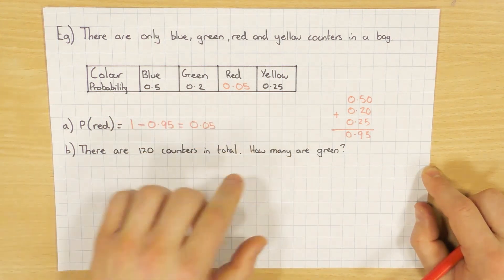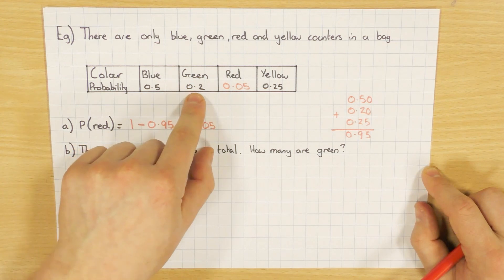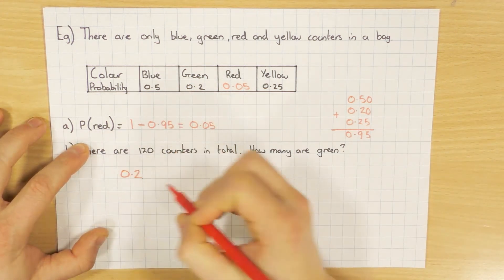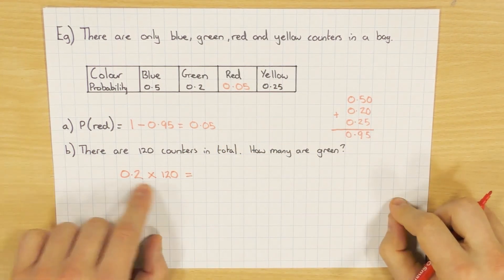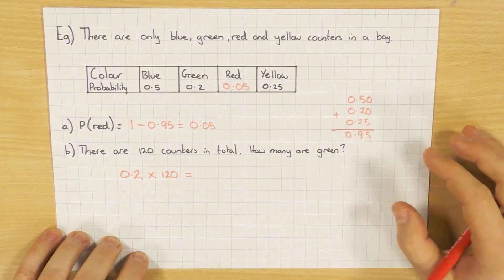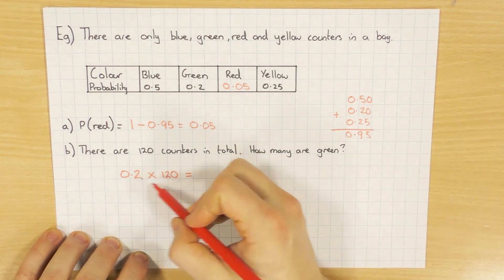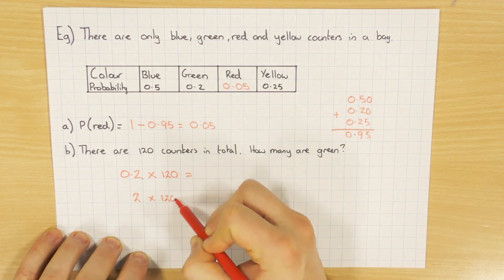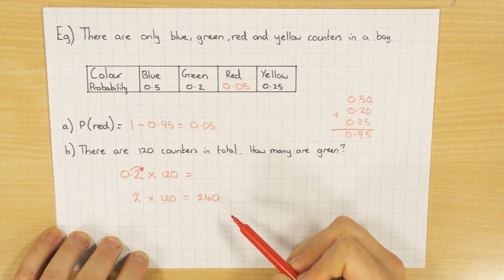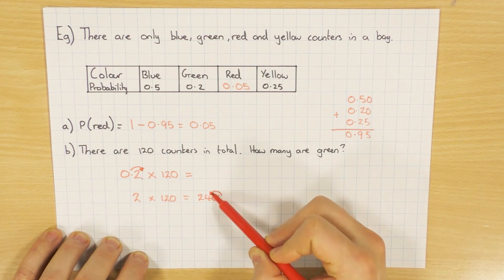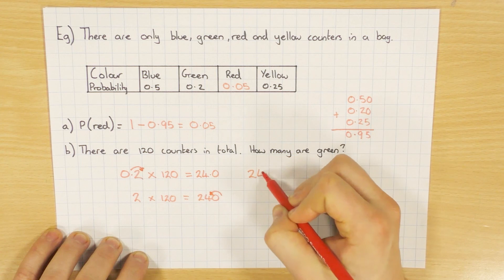And again, this is a very common question. If they've told you the probability, they could then go, well, if there are 120 counters in total, how many are green? The probability of getting a green is 0.2, and there's 120 counters. So all I do is 0.2 times by 120. If you're unsure, check out my multiplying video. But most commonly for these sorts of ones, everyone's happy to go, well, 2 times 120 is 240. But obviously I've changed the question. I've moved the decimal point once to the right to get it to be 2. So in my answer, I've just got to go back one and move it once to the left. So I'll have 24.0, which of course is just 24.